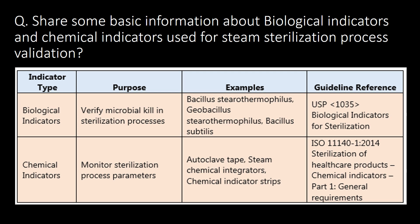Share some basic information about biological indicators and chemical indicators used for steam sterilization process validation. Biological indicators are used to verify microbial kill in sterilization processes, whereas chemical indicators are used to monitor sterilization process parameters. Refer to the table for examples and guideline references.